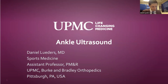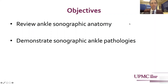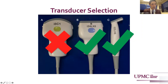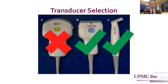The foot and ankle are superficial structures and so are really amenable to the use of ultrasound in evaluation. Because of their superficial nature, you're going to use a high-frequency linear probe. Given the bony contours and sharp contours of tendinous anatomy, often your small footprint linear array transducer will be your go-to. Something like a hockey stick transducer will allow you to get into the nooks and crannies of a foot and ankle to maintain visualization of your intended structure.